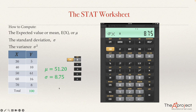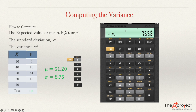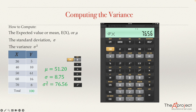The standard deviation of this random variable is 8.75. If you want the variance, you square this number using the x-squared key. The equal sign disappears from the screen, meaning you've pressed the x-squared key, and the value shown is the variance — which is 76.56.